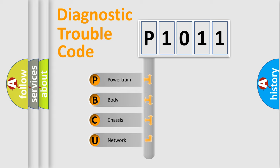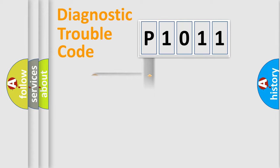We divide the electric system of automobile into four basic units: Powertrain, Body, Chassis, and Network.